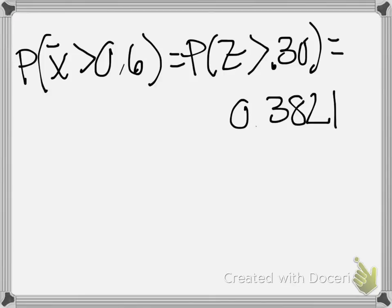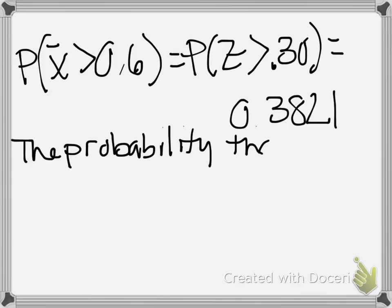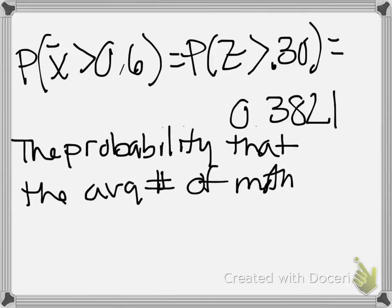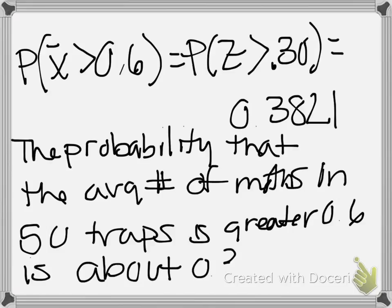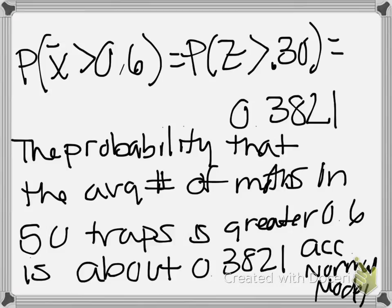We then write our conclusion. Use your question to help you. The probability that the average number of moths in 50 traps is greater than 0.6 is about 0.3821 according to the normal model. And 8 minutes later, I'm done.